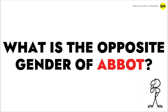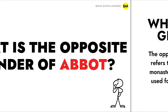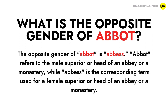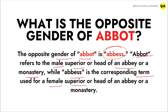What is the opposite gender of a bot? The opposite gender of a bot is a base. A bot refers to the male superior or head of an abbey or a monastery, while a base is the corresponding term used for a female superior or head of an abbey or a monastery.